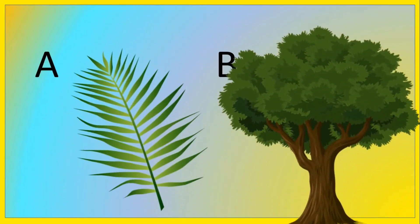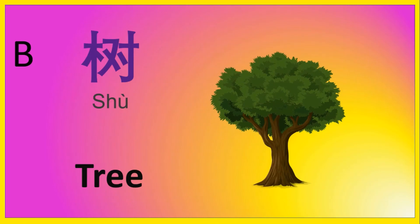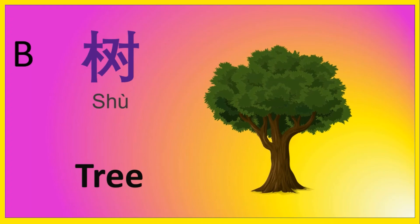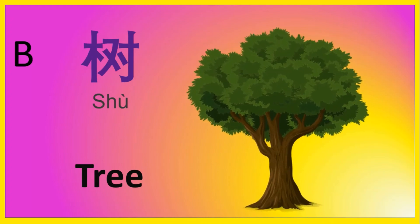哪一个是树? 树, 树. It's B — 树, tree. 种树, plant a tree. 大树, big tree. 小树, small tree. 树 is tree.